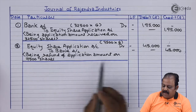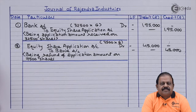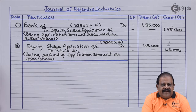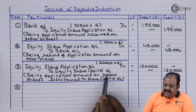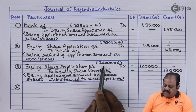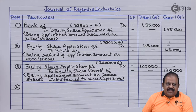Entry 3 — for allotted 20,000 shares, application amount transferred to share capital: Equity Share Application Account Dr ₹1,20,000 (20,000 shares × ₹6) to Equity Share Capital Account ₹1,20,000. This completes the share application stage.